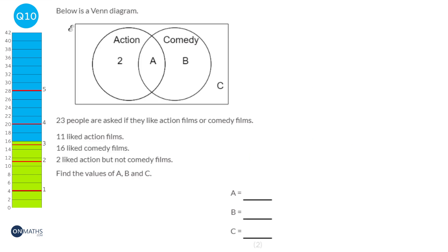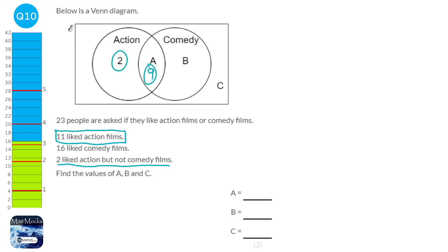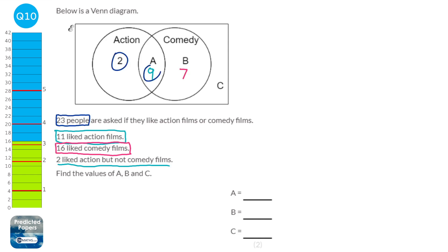Two people liked action but not comedy, and 11 liked action in total, so 9 also liked comedy. Since 9 liked both and 16 liked comedy in total, 16 − 9 = 7 liked only comedy. With 23 people altogether, subtracting those who liked action (2), both (9), and only comedy (7) leaves 5 who liked neither. The answers are 9, 7, and 5.